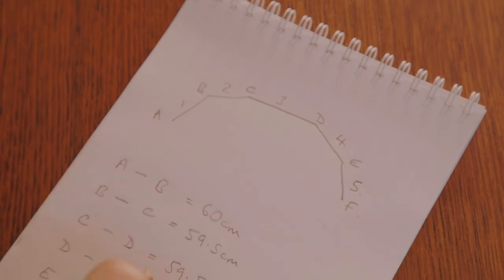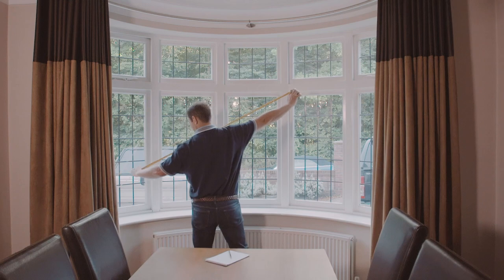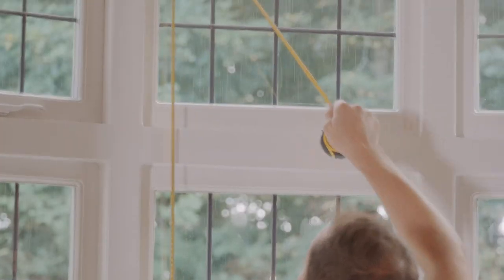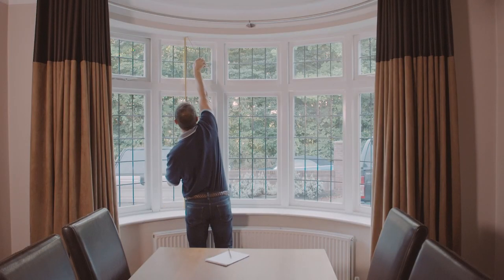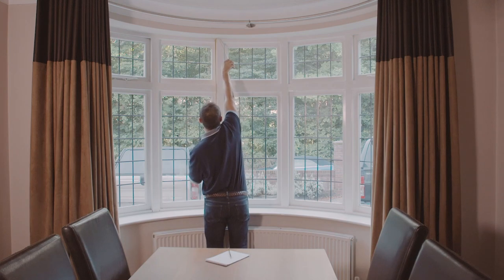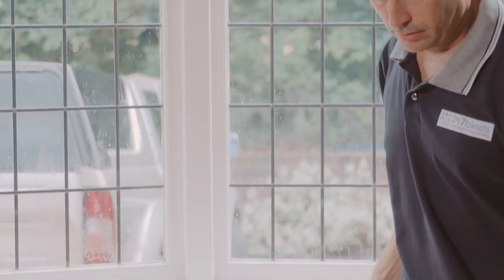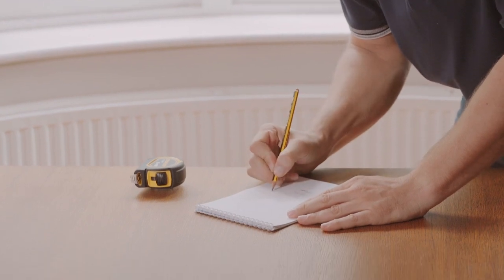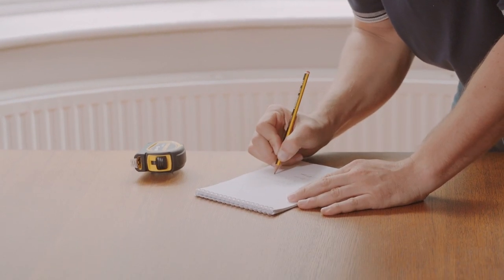And now we need to measure the height or drop. Again taking three measurements throughout: left, middle and right, for each panel location. And now we're going to use the smallest set of figures to ensure we get consistent fit along the entire bay window.